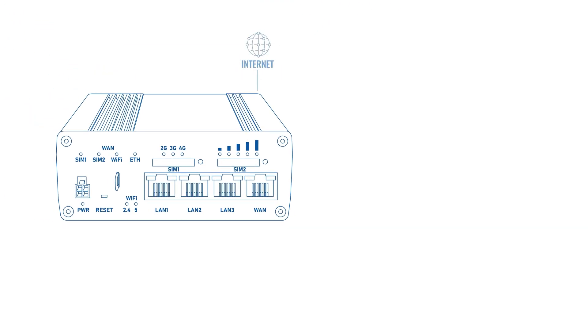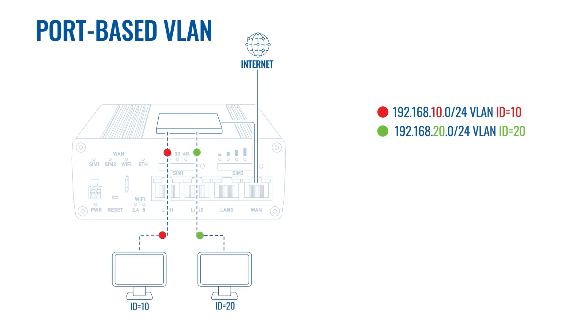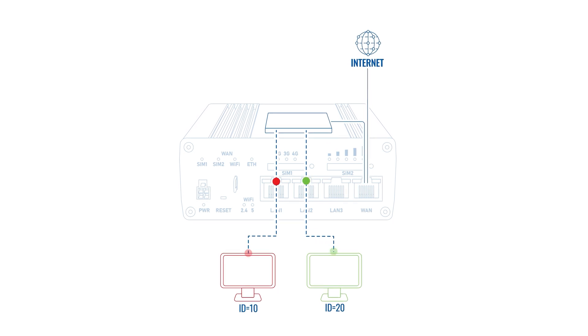Port-based VLAN uses physical connectivity like Ethernet ports to determine which device will be assigned to which local area network. Let's say we have a router with four Ethernet ports, two of which are configured to perform as port-based VLANs. Both Ethernet ports are configured to have different VLAN networks, making one router have two non-related local area networks. Because these two Ethernet ports support different networks, devices connected to one of them are separated from devices connected to the other.